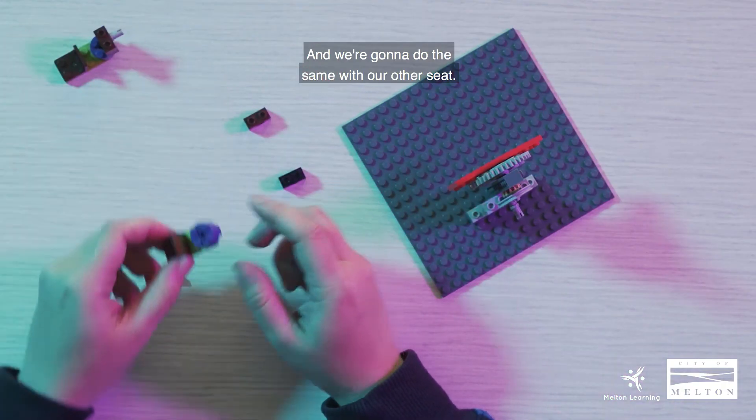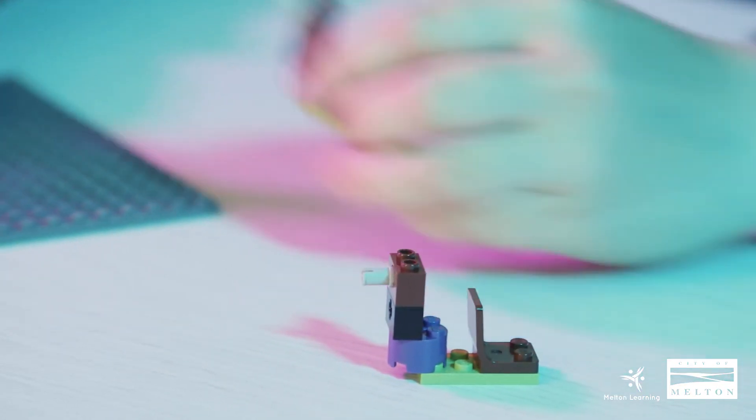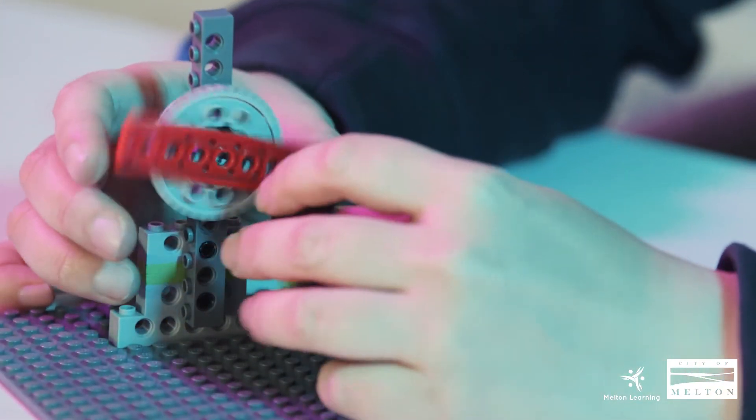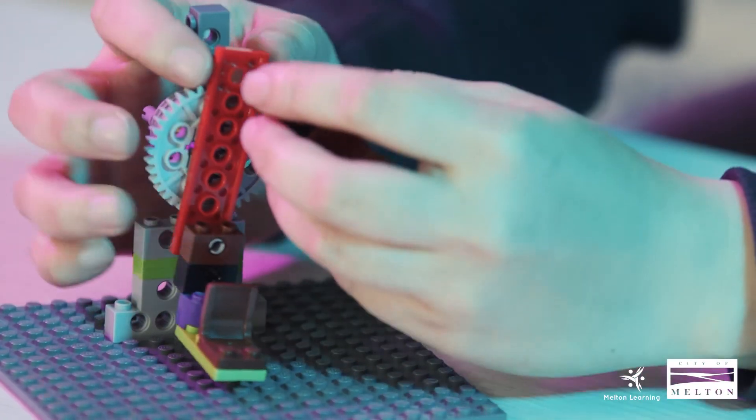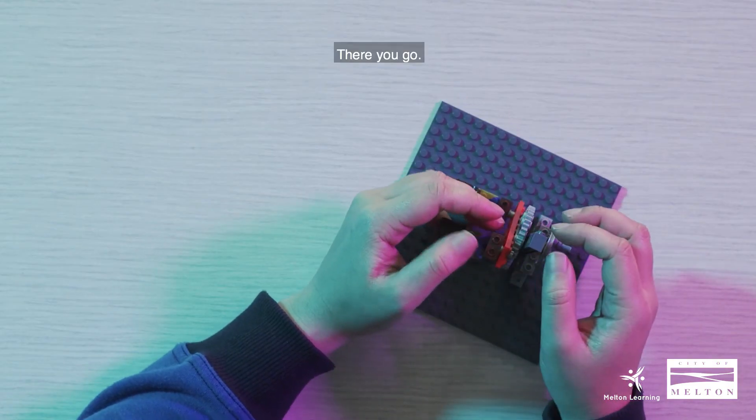And we're going to do the same with our other seat. So these are our seats. And we're going to attach them on the edge. And this is our Ferris wheel.